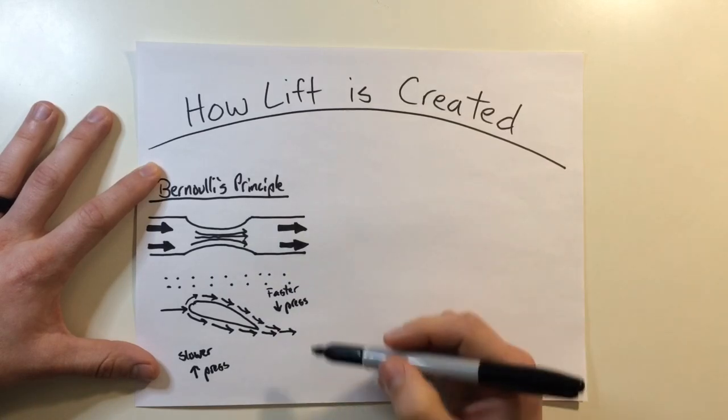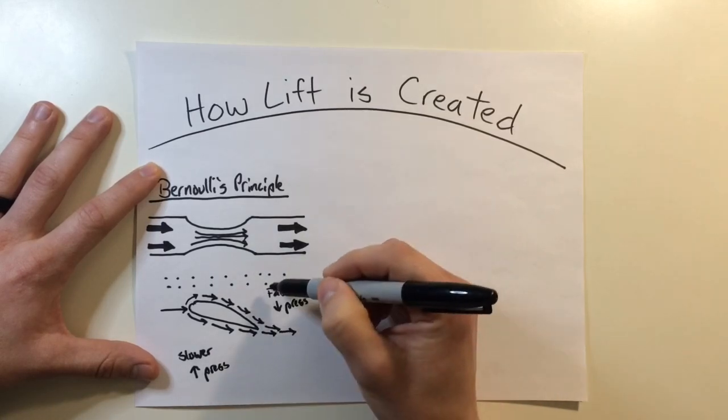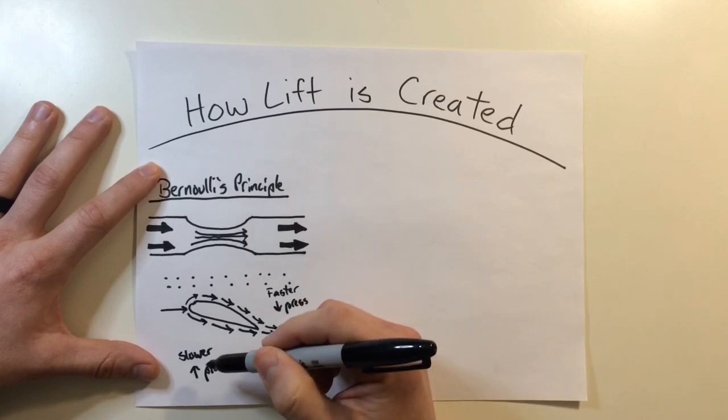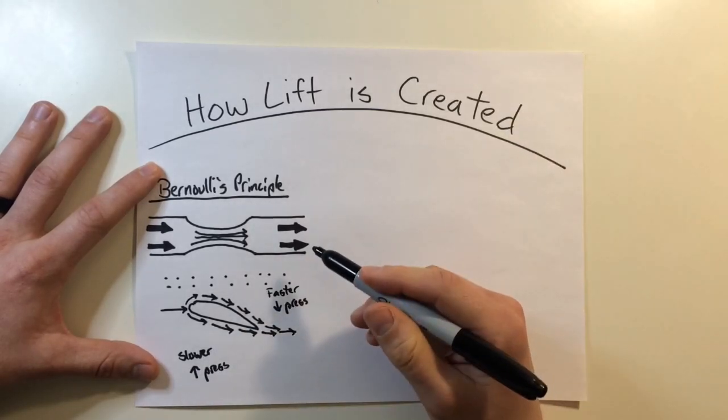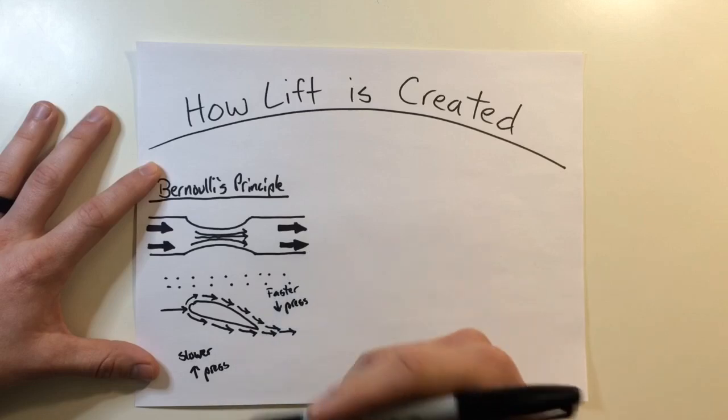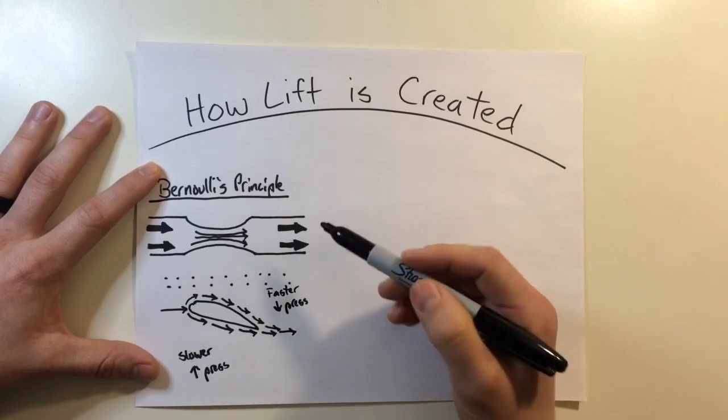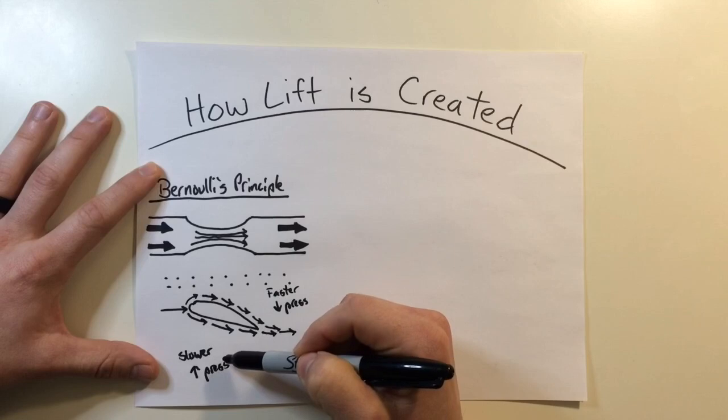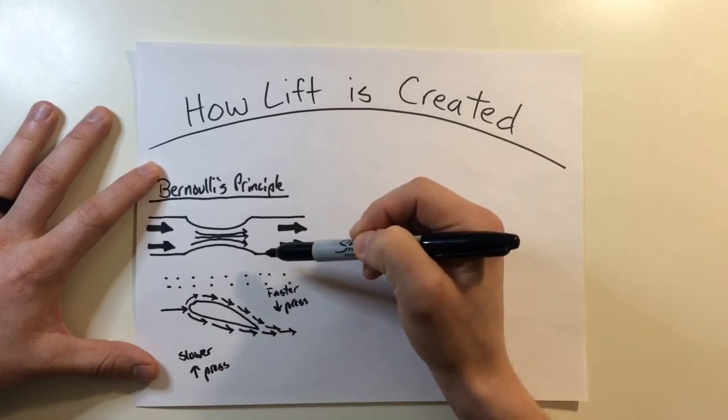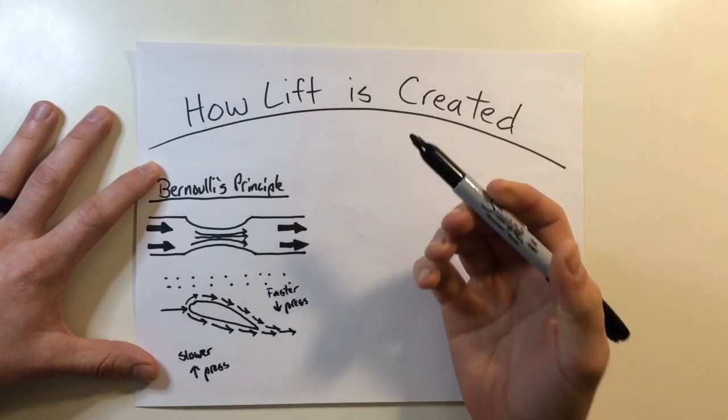Now what we see right here is there's a pressure differential above the blade and below the blade. And with everything in nature, everything is constantly seeking equilibrium. So what's happening is we have higher pressure, lower pressure. This is pushing the entire airfoil upwards with a force known as lift.